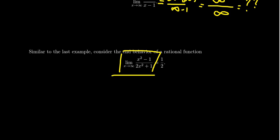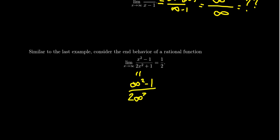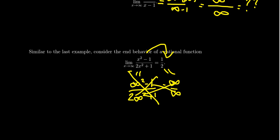Consider the limit as x approaches infinity of x squared minus 1 over 2x squared plus 1. We've learned this equals 1/2, but plugging in infinity gives infinity over infinity. We've seen that indeterminate forms can equal exact values like 1/2, and the process to avoid this involves algebraic maneuvers, which can be tedious. For transcendental functions, algebra is insufficient — a function is transcendental if its methodology transcends what algebra can do.